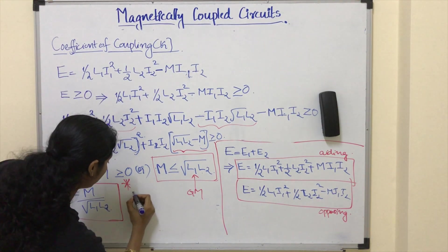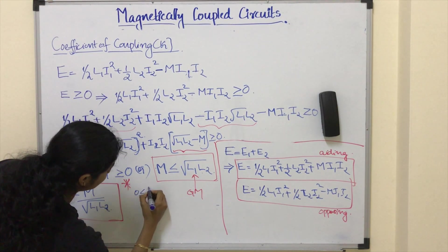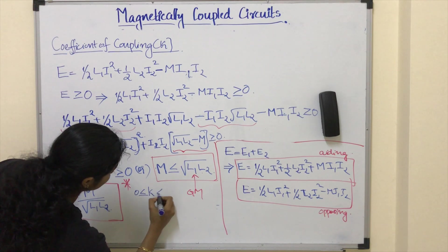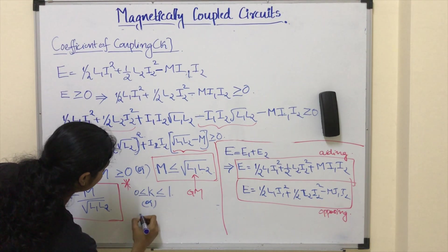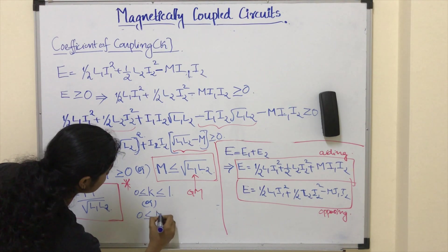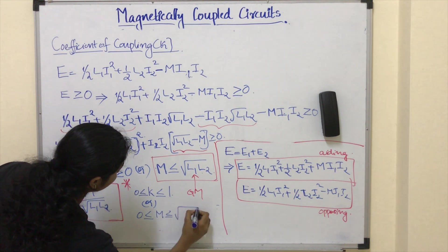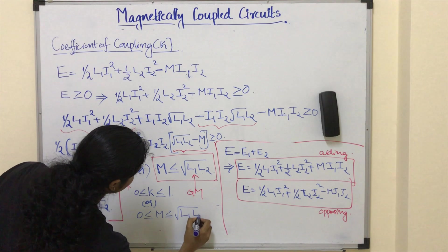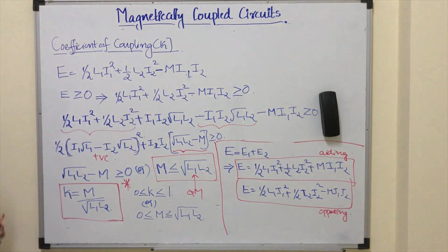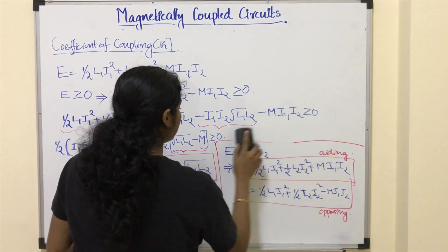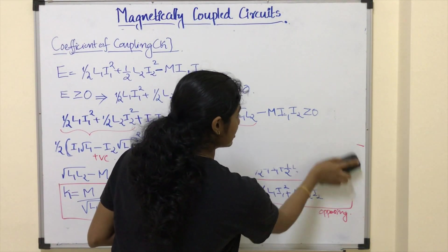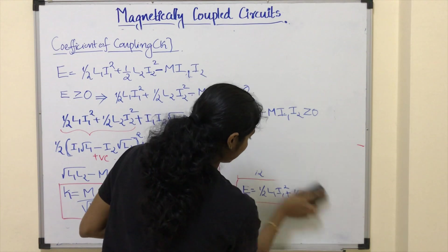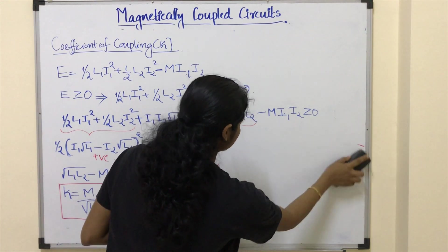The value of K usually lies between 0 and 1, or equivalently the value of mutual inductance lies between 0 and the geometrical mean of L1 and L2. The value of K can be 0, 1, or any value in between.